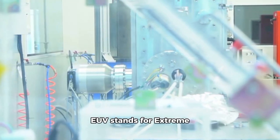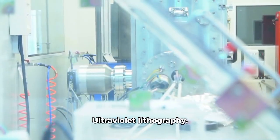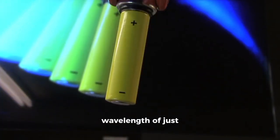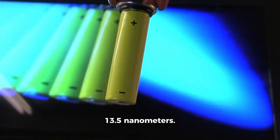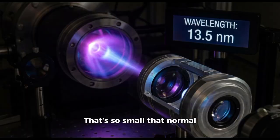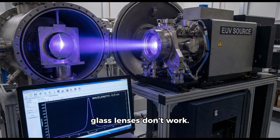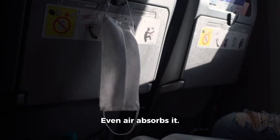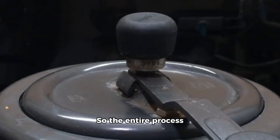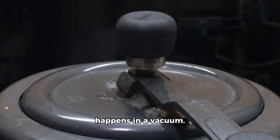EUV stands for Extreme Ultraviolet Lithography. It uses light with a wavelength of just 13.5 nanometers. That's so small that normal glass lenses don't work. Even air absorbs it. So the entire process happens in a vacuum.